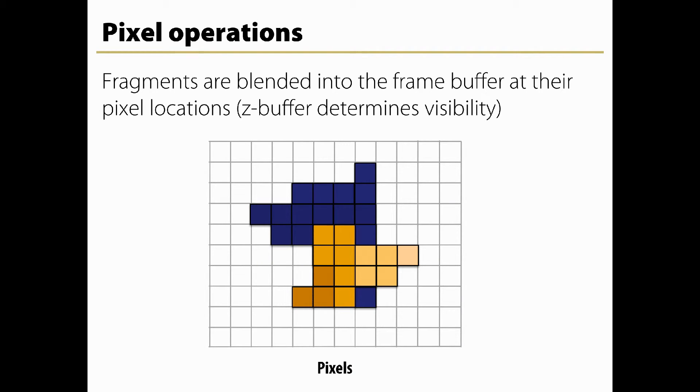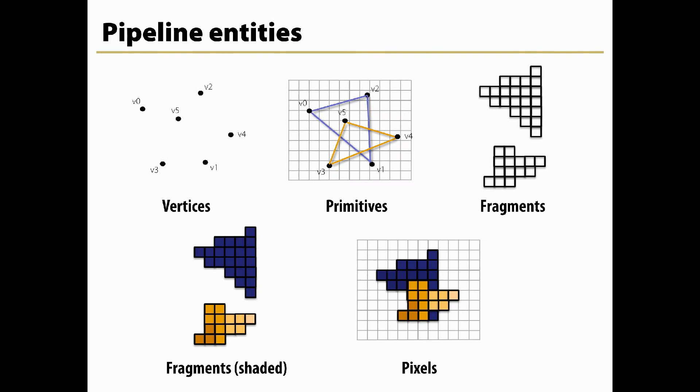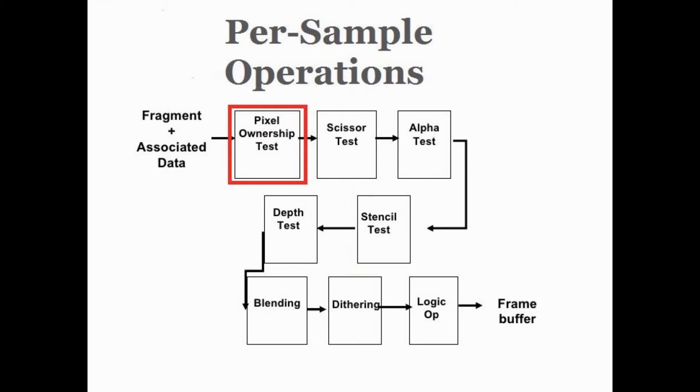The fragment data output from the fragment processor is then passed through a sequence of steps. The first step is a sequence of culling tests. If a test is active and the fragment fails the test, the underlying pixel samples are not updated, usually. Many of these tests are only active if the user activates them.